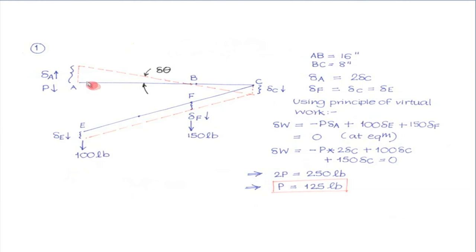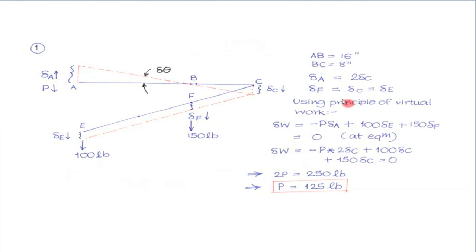Applying the principle of virtual work: the virtual displacement is compatible — no virtual work is done at point B or at the collar. Virtual work is done only by P, the 100 lb force, and the 150 lb force. According to our virtual displacement, point A moved up but force P is downward, so: minus P · delta A + 100 · delta E + 150 · delta F = 0. Substituting delta A = 2 · delta C, delta E = delta F = delta C, we immediately get P = 125 pounds.